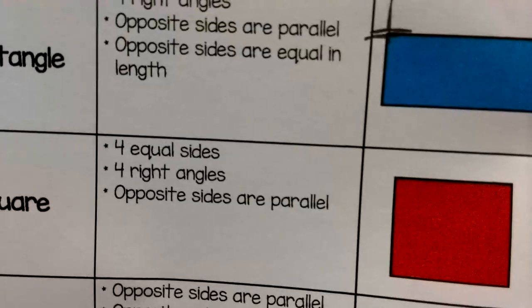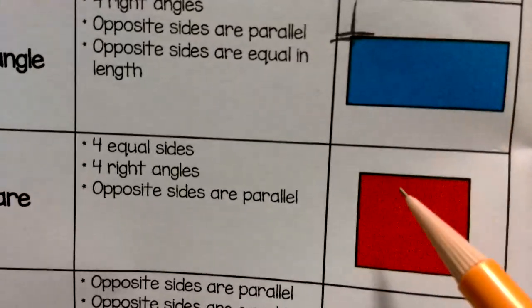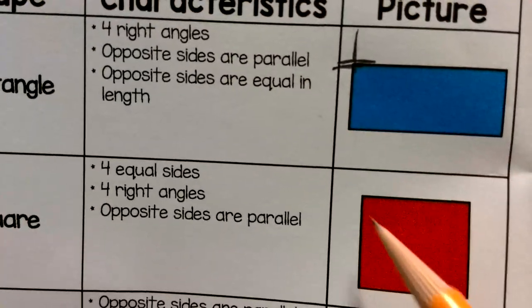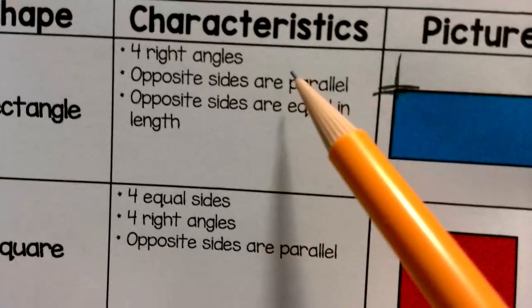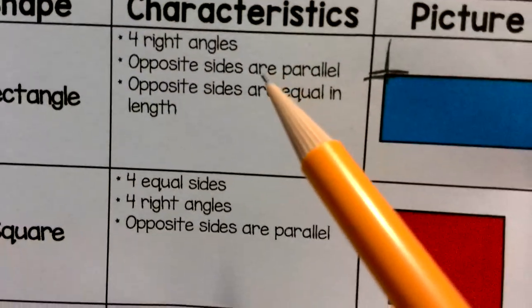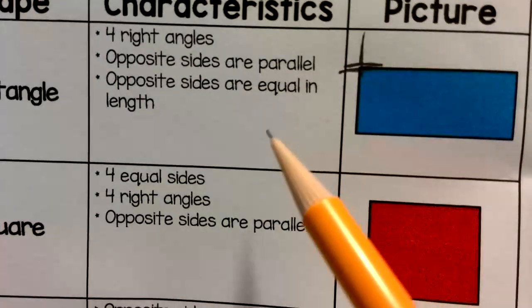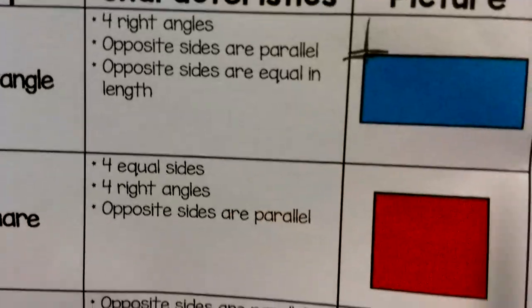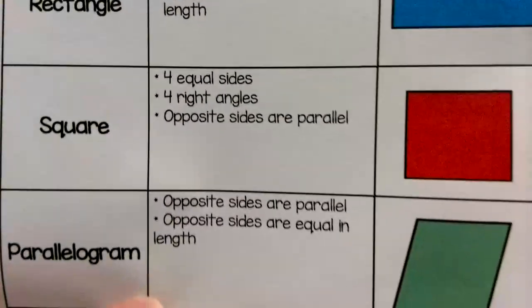You can see similarities right now in the rectangle and the square. They both have four right angles — that's how we could group those together. Their opposite sides are also equal in length, and their opposite sides are parallel.